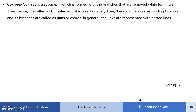The next definition is co-tree. A co-tree is a subgraph formed with the branches that are removed while forming a tree. Since a tree must include all nodes connected with no loops, some branches must be removed to avoid loops. Hence, the co-tree is nothing but the complement of a tree. For every tree, there will be a corresponding co-tree, and each tree's co-tree is unique — different trees produce different co-trees.